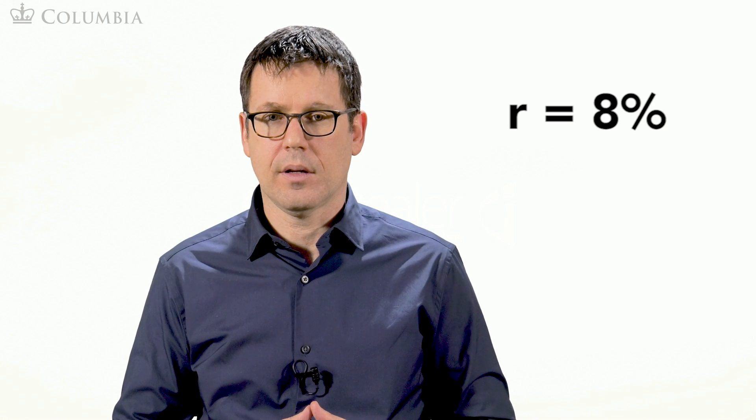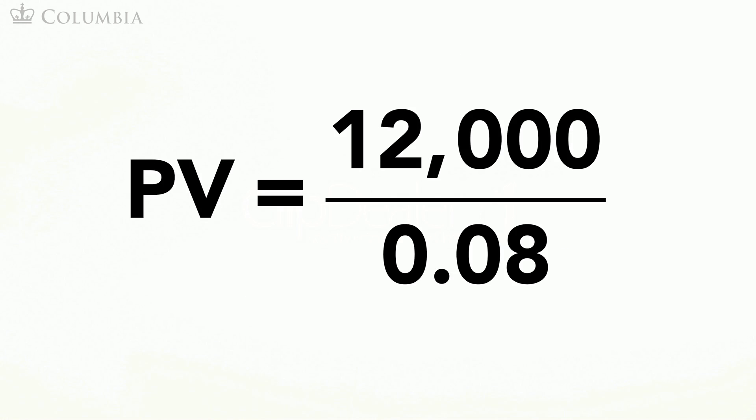You will receive $12,000 every year in perpetuity, therefore you can use the perpetuity formula to compute the value of all these cash flows discounted to today. This is simply 12,000 divided by 0.08, or $150,000.